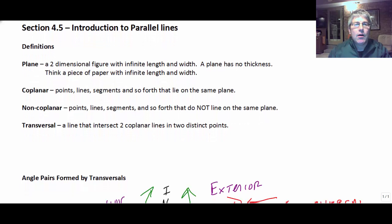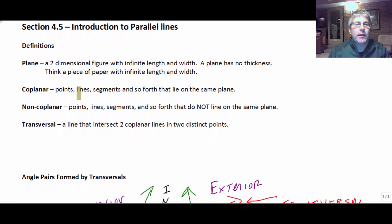Coplanar are points, lines, segments, and so forth that lie on the same plane. So lines can be coplanar, points can be coplanar, segments can be coplanar if they lie in the same plane. And then, of course, non-coplanar would be points, lines, and segments that do not lie in the same plane.